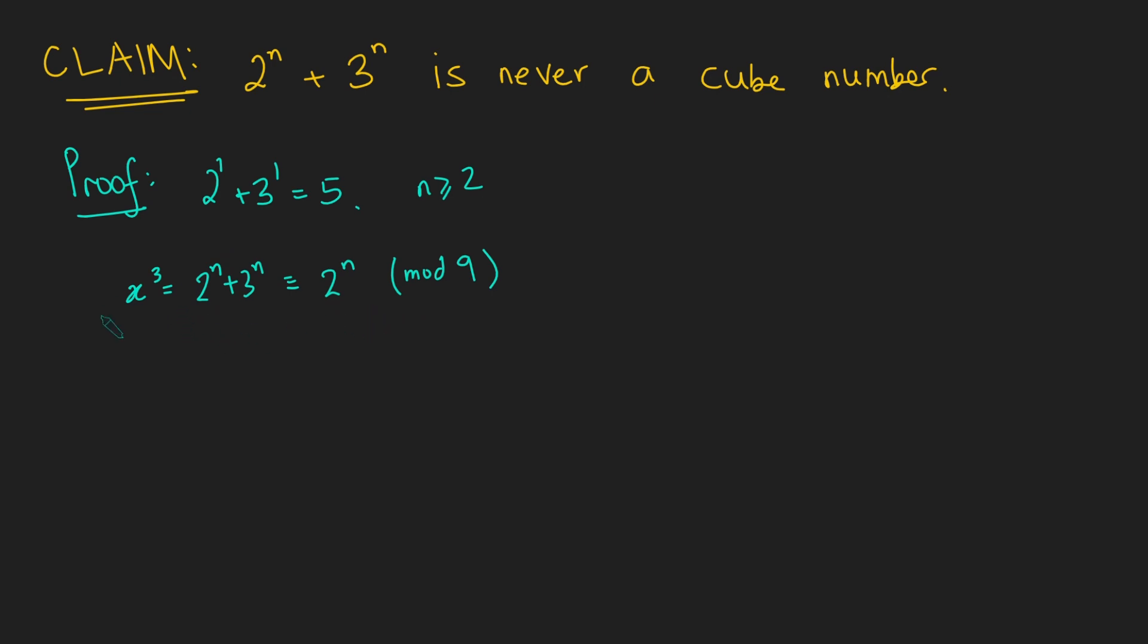But now what we're going to do is have a think about x cubed. x is a positive integer, so when I cube it, it can only be one of three values mod 9. That is 0, 1, or minus 1. So if you've not seen this result before, let me just show it here.